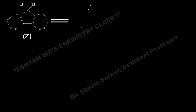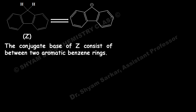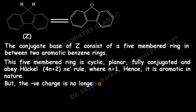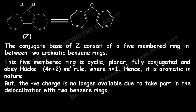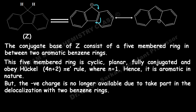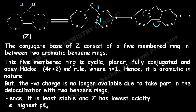For Z, the conjugate base consists of a five-membered ring between two aromatic benzene rings. This five-membered ring is cyclic, planar, fully conjugated, and obeys Hückel's 4n+2 π electron rule where n=1, hence it is aromatic. However, the negative charge is no longer available for delocalization with the two benzene rings attached to it. Thus, the conjugate base of Z will be least stable, and Z has the lowest acidity, meaning it will have the highest pKa.